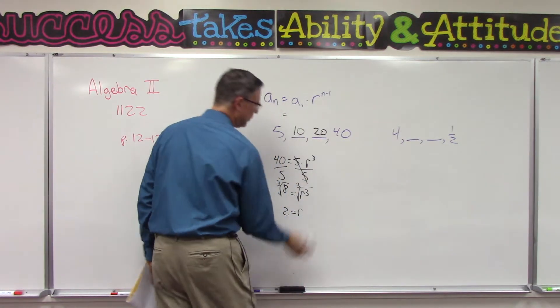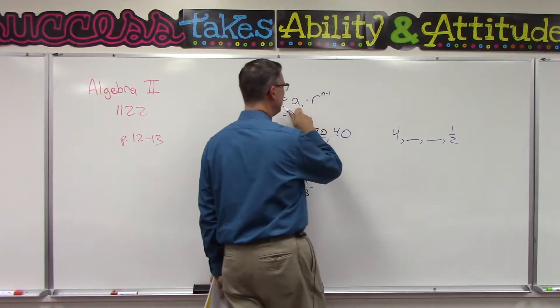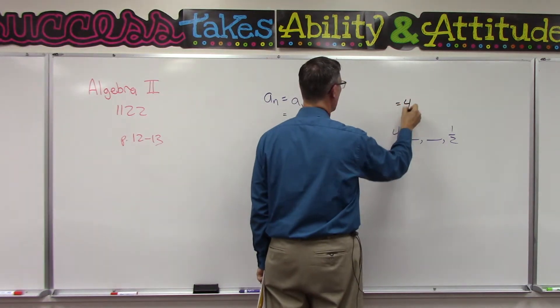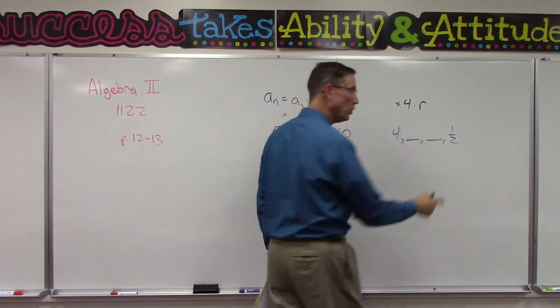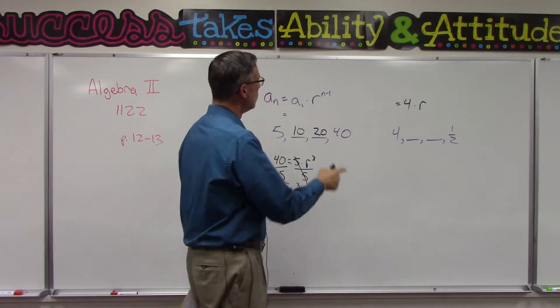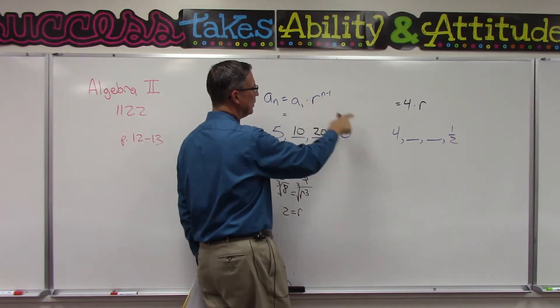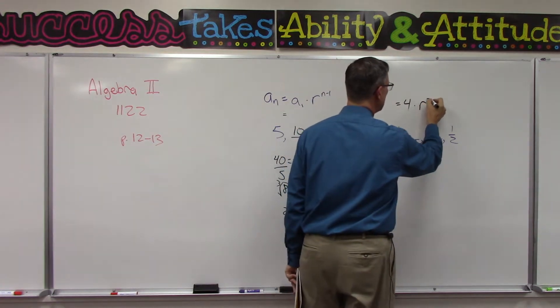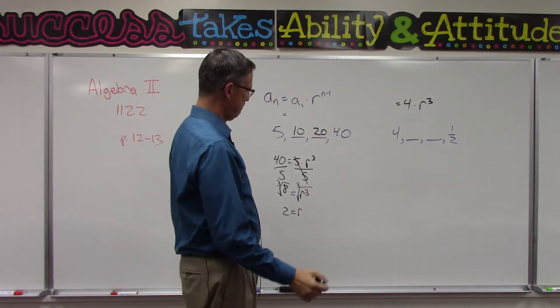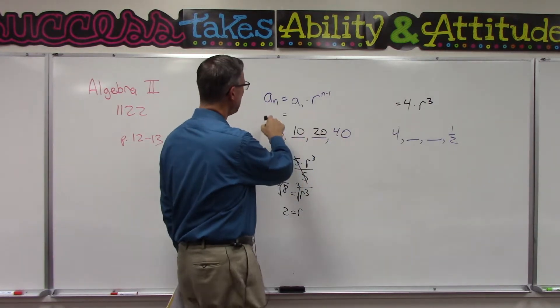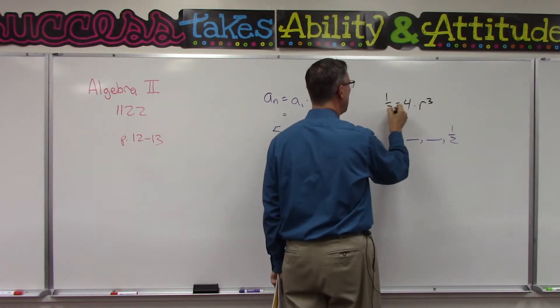We're going to use the same formula here. The first one, in this case, plugging in for the a1, is 4, times r to the... Now we have one, two, three, we have four terms. So 4 is the n right here. There's four terms, so 4 minus 1, we're going to do 3 on r to the third power again. Then that fourth term, the n term, is the last term, which is one half.